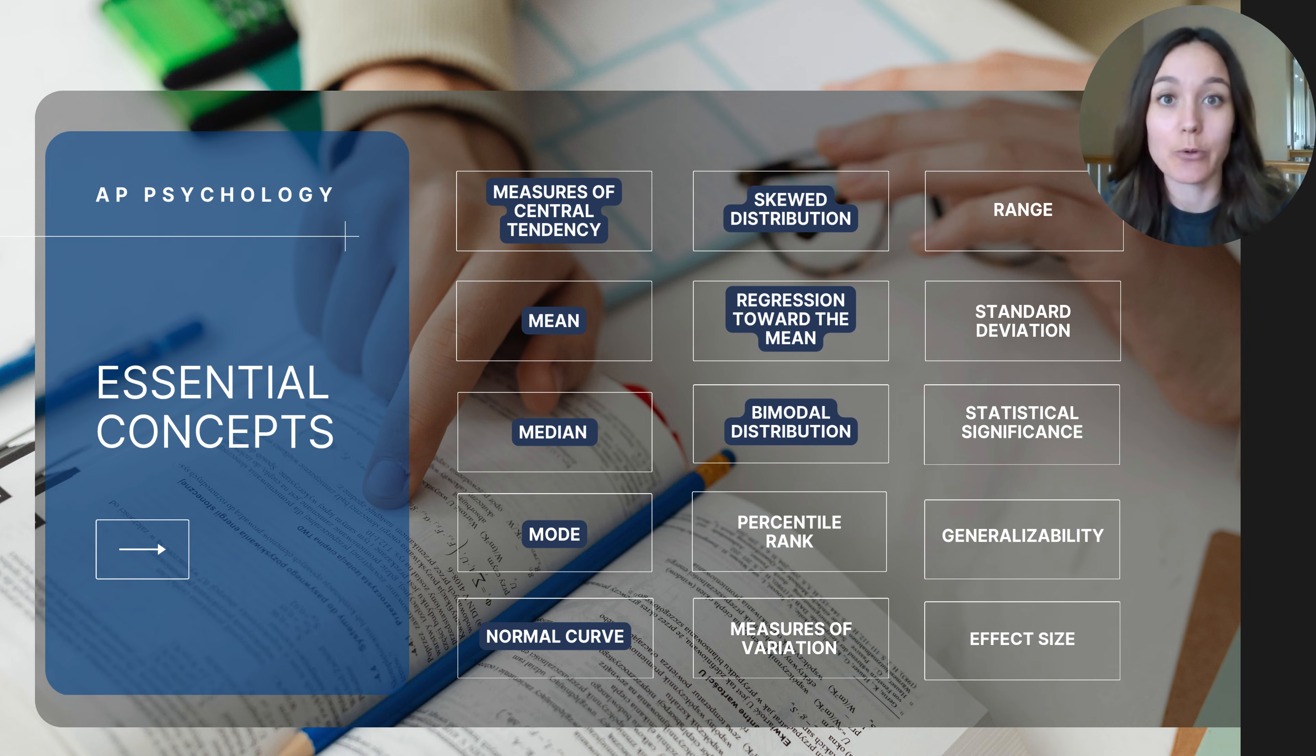These are the essential concepts that I will cover over 7.1 and 7.2. In this particular video, you should be able to follow along and listen to the following concepts explained: measures of central tendency, mean, median, mode, normal curve, skewed distribution, regression toward the mean, and bimodal distribution. The rest of the concepts will come in video 7.2.